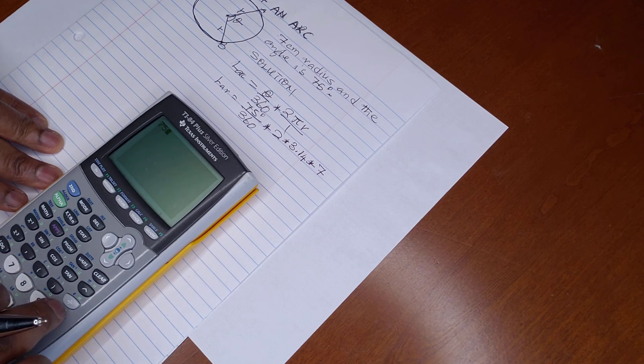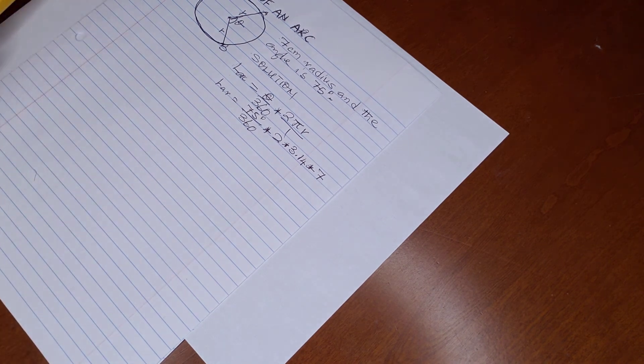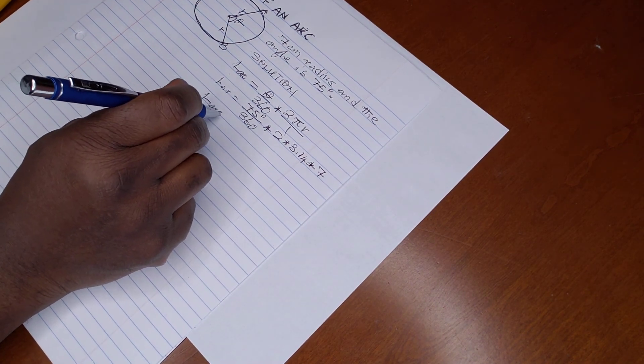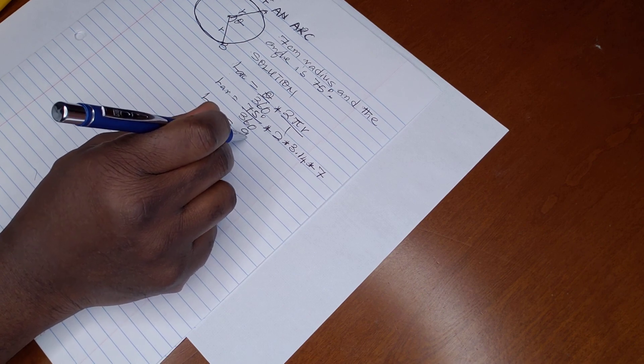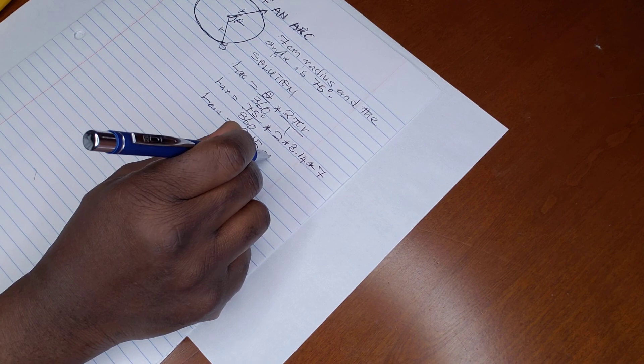75 multiply by 2, multiply by 3.14, multiply by 7, we hit enter, and then we divide by 360, we hit enter. So that gives us 9.17. So we write it down: length of arc equals 9.15 centimeters.